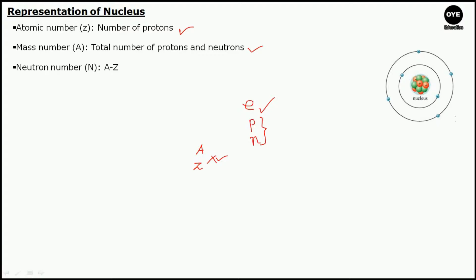For example, say we want to represent the helium nucleus. We write the symbol for helium, which is He. Helium contains two protons, so its atomic number is 2, written in the lower subscript. It also has two neutrons, so the total number of protons and neutrons is 2 plus 2 equals 4. Its mass number is 4, written in the upper subscript. This is the symbolic representation for the helium nucleus.